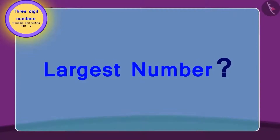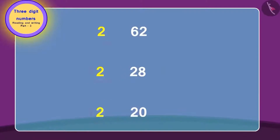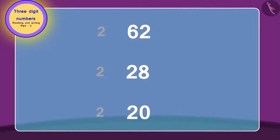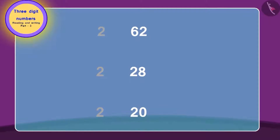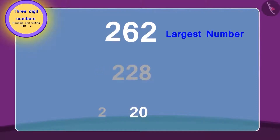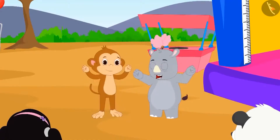Let's find out which team won the ticket. To find the largest number, first look at the third digit of all three numbers and identify the highest. Here all the numbers are of the same value, so we will look at the numbers made of the next two digits. The highest is 62, then 28, then 20. In this way, 262 is the largest number and 220 is the smallest. Team 1 has won the ticket by reaching the highest number.